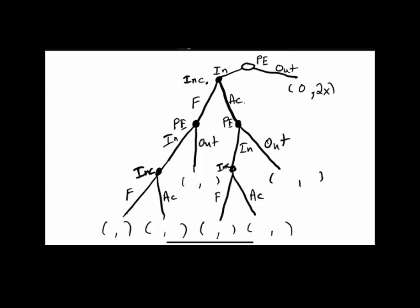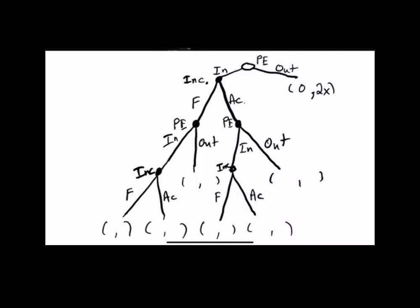Now let's consider the case where the potential entrant chooses in, the incumbent accommodates, and then the potential entrant chooses out. The potential entrant earns one dollar in the first period and zero when it's out, so one plus zero equals one. The incumbent has a monopoly one period earning X, and one period the entrant entered and they accommodated earning Z, so they earn Z plus X.